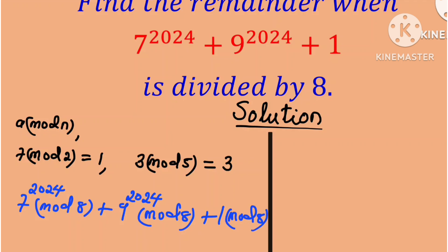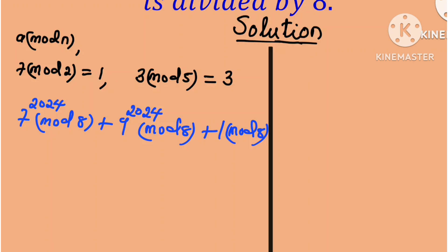And by using modular exponentiation, we can write this as 7 minus 8 raised to the power 2024 mod 8 plus 9 minus 8 raised to the power 2024 mod 8 plus 1 mod 8.